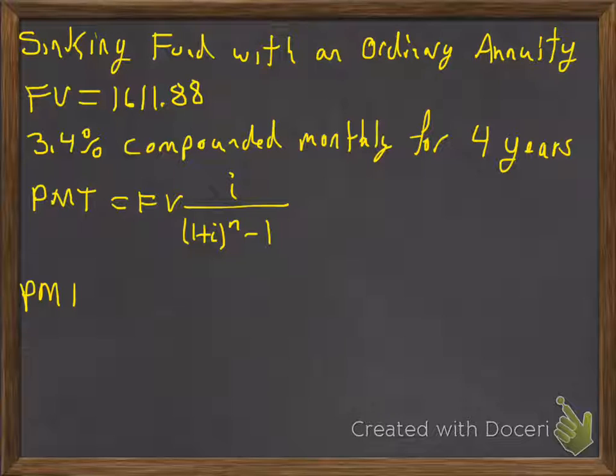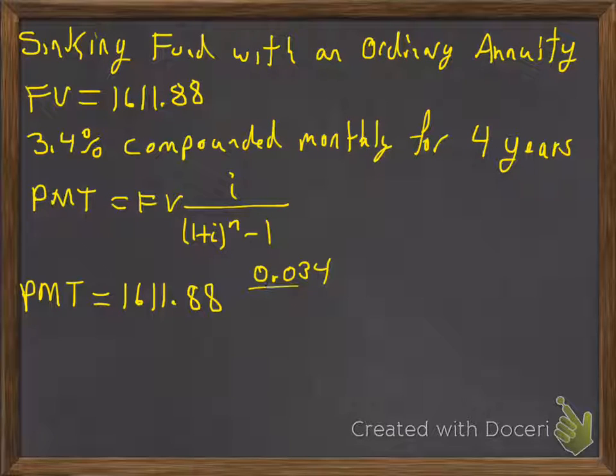For this particular example, our payment is going to be equal to our future value of $1,611.88 multiplied by the interest rate per period, which is 0.034 divided by 12,